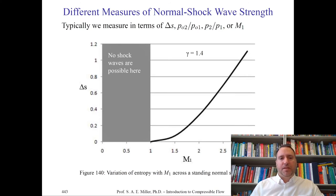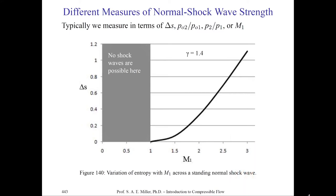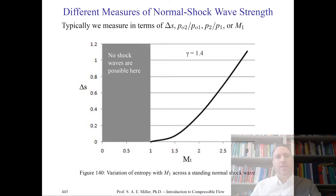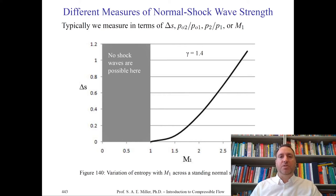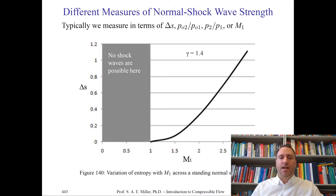Figure 140 plots ΔS versus M1 from 1 to 3 for gamma = 1.4, showing the rise in entropy. Shock strength is typically measured by ΔS, P02/P01, P2/P1, or M1. Most commonly, people discuss shock strength as a pressure rise — for example, a P2/P1 of two from standard conditions would be roughly one atmosphere increase. All traditional equations are defined as a function of Mach number.